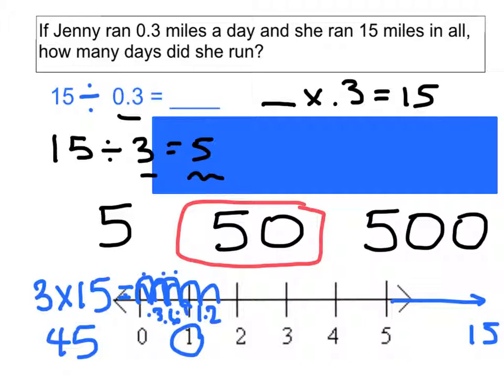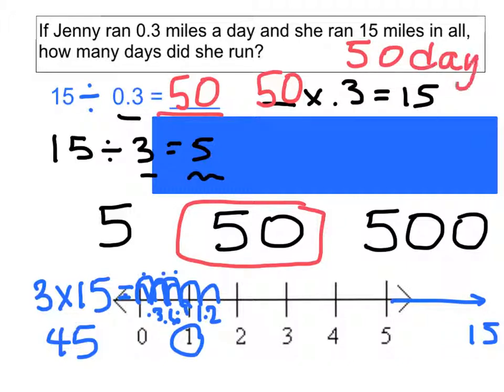The closest answer on our list here would be 50. And that makes sense, because what we've done here is we've been able to calculate that 50 is the closest to 45. If we plug that into our answers here, we can see, does that make sense? We can say to ourselves, if I were to do 15 miles divided by 0.3 miles, that would take 50 days. And yes, it does make sense. So we're going to write that she ran for 50 days.